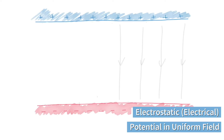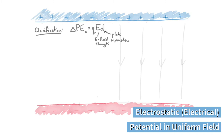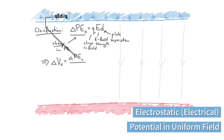Now let's look at electrical potential in a uniform field. A clarification from the previous video: the change in potential energy — not just potential energy itself — is equal to QEd, where d is the plate separation, E is the electric field strength, and Q is the charge within that field. The change in potential is therefore equal to QEd over Q — the change in potential energy over Q — and since the Q's cancel, we get delta V equals E times d.